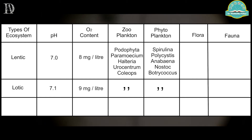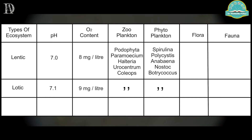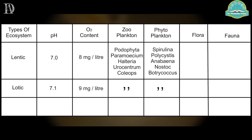As far as phytoplankton is concerned in the Lentic ecosystem, it included Spirulina, Polycystis, Anabaena, Nostoc, and Botrycox. In the Lotic system, all the phytoplanktons were also present.